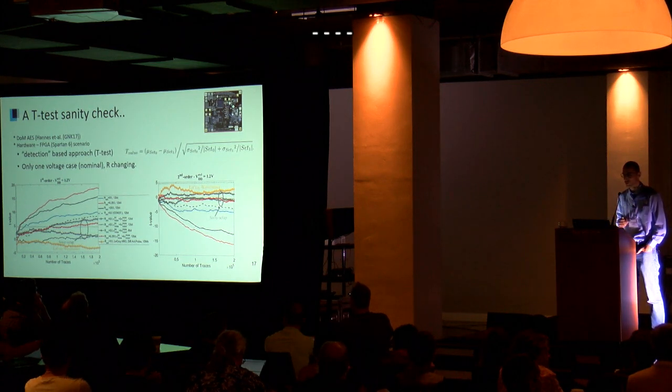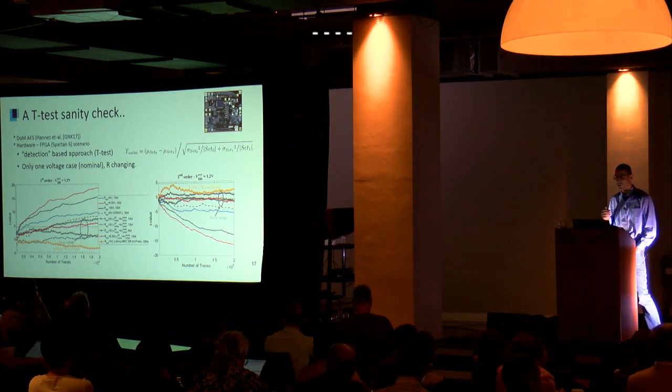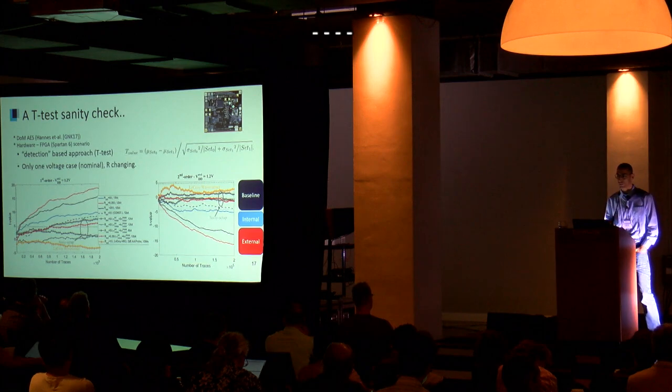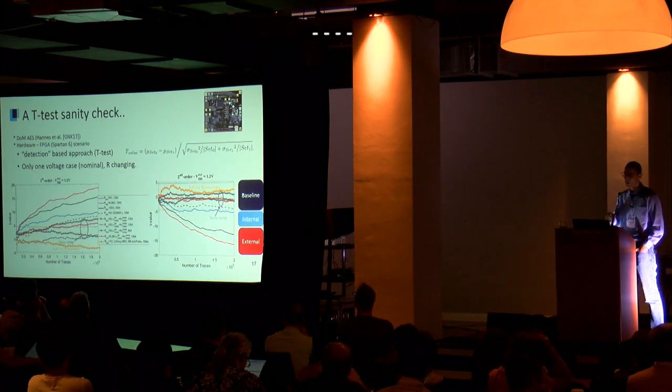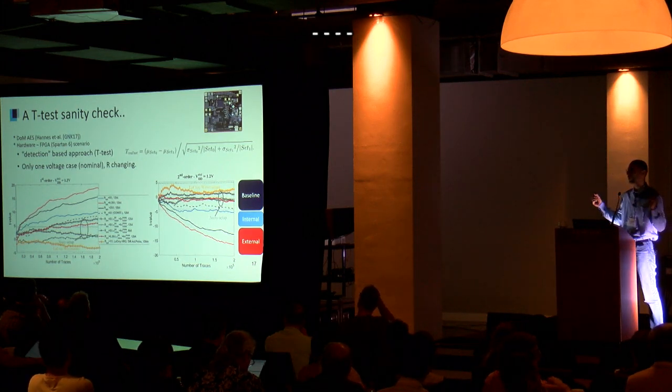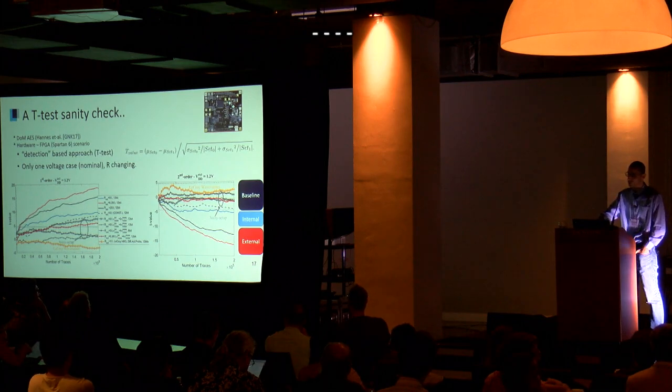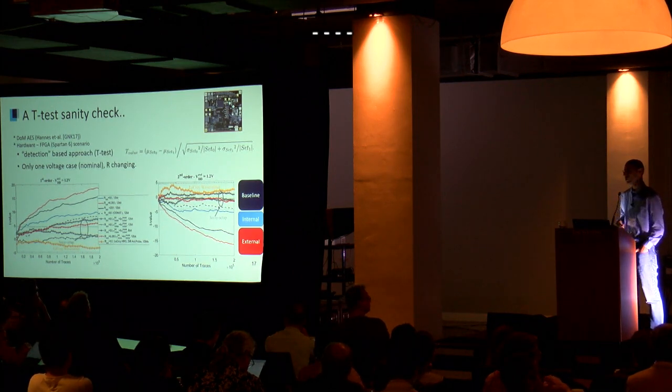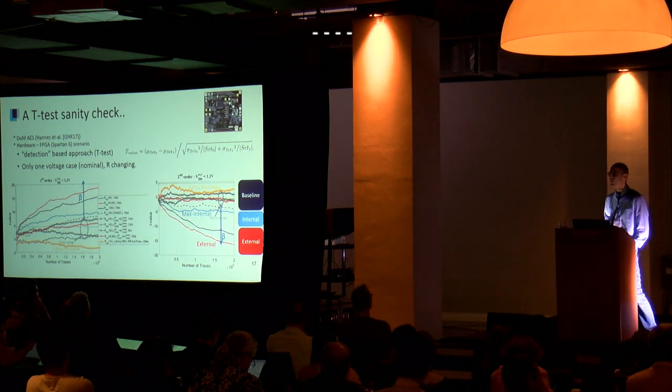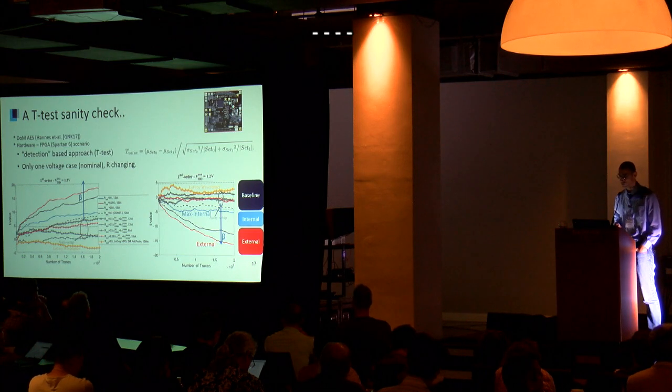We moved on to a sanity check. This is one voltage scenario at 1.2 volts. On the left is a first-order t-test, on the right a second-order t-test. The baseline curves show different measurement equipment. When we tweak the internals of the hardware design, the spacing between shares, we see this blue curve showing internal amplification. When we aggressively play with the external setup, we can get significant leakage.